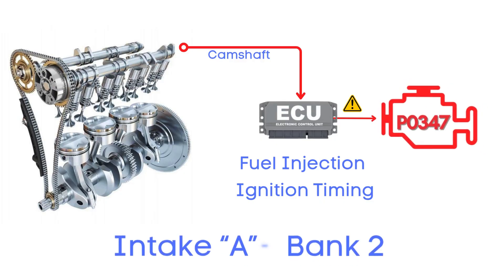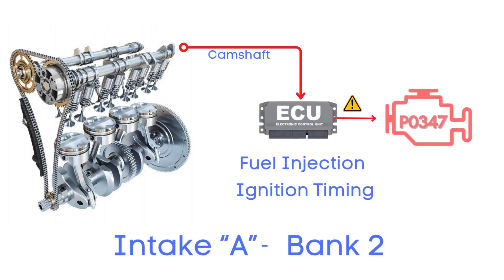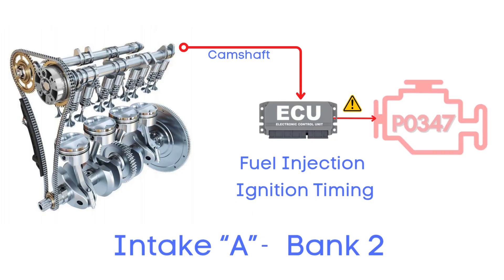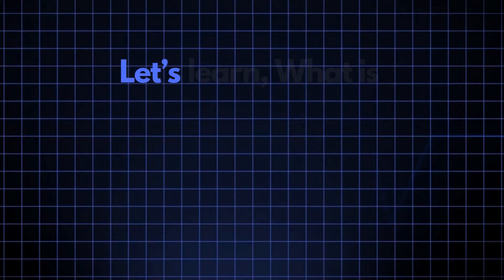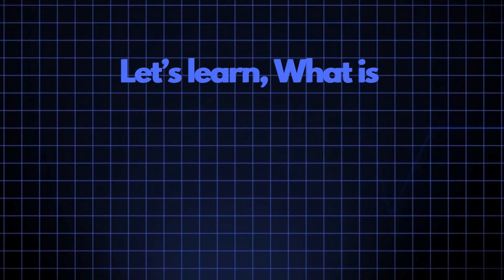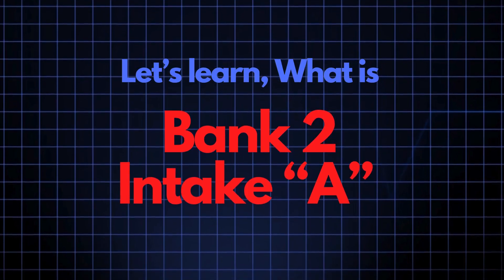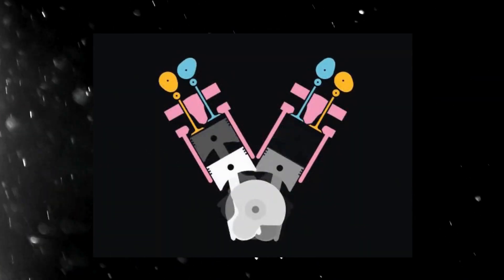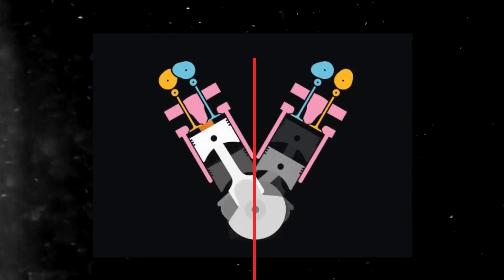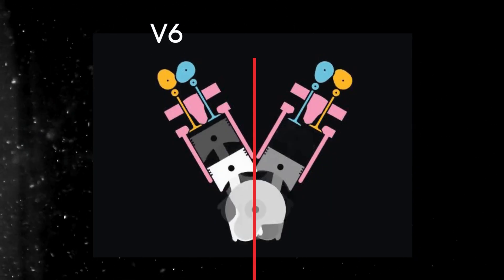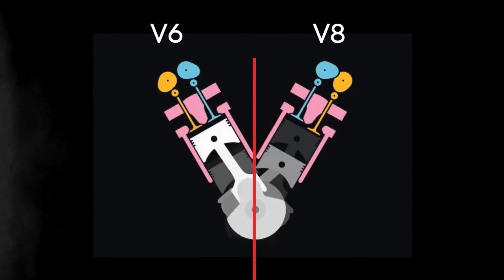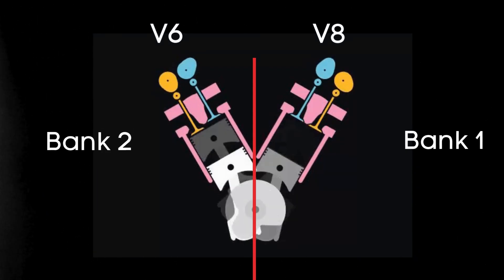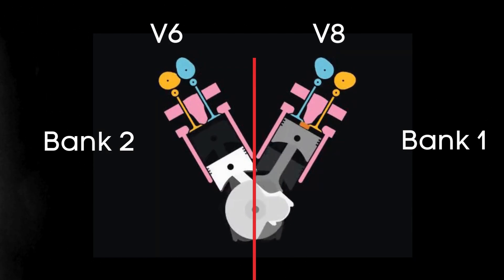P0347 indicates an issue with the camshaft position circuit for bank 2, specifically referring to the intake camshaft. In engines with multiple cylinder banks, like V6 or V8 engines, you'll have two sides, or banks, of cylinders.